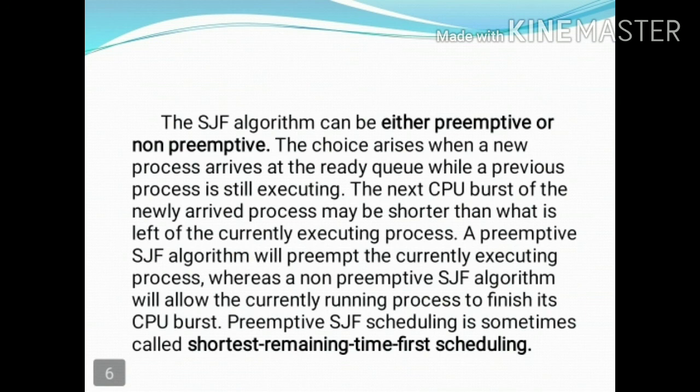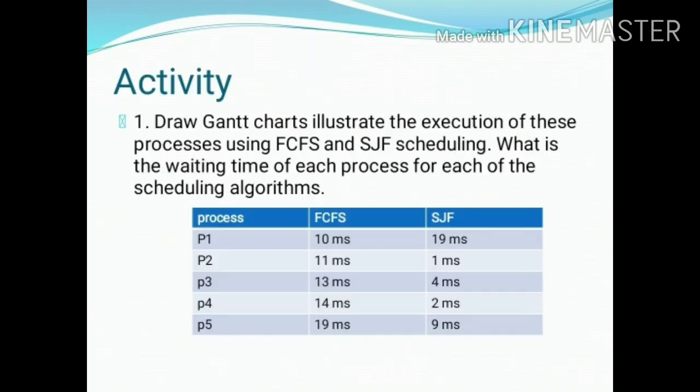For the activity section, here is a problem: using the FCFS strategy and SJF strategy, draw the Gantt chart and calculate the average waiting time for the two strategies. If you solve this problem, you can send it to our official group. Thank you.